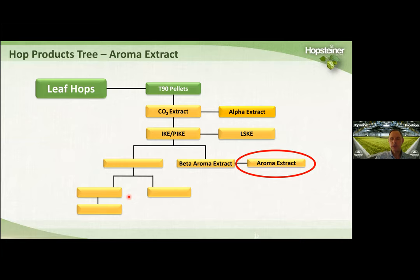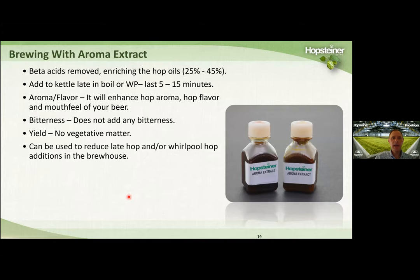We make another hop kettle aroma product called Aroma Extract. Aroma Extract is basically our Beta Aroma Extract product except we've removed most of the beta acids, which further enriches the oil concentration from about 25% to 45%. It's used in the same way as Beta Aroma Extract — added late in the boil or in the Whirlpool. It adds basic hop aroma to your beer without adding any bitterness. There's no vegetable material, and it has many of the same properties as Beta Aroma Extract in terms of stability, storage, and shelf life.